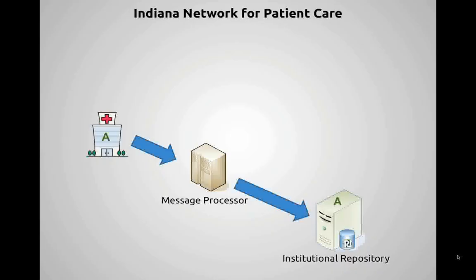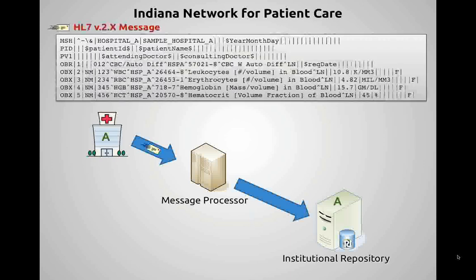Typically, if you want to send results from one place to another, a hospital or information system packages those results into an HL7 message. LOINC was designed from the very beginning to fit within this messaging context. In an HL7 message, vertical bars delineate fields like database fields. At the top of the message there are segments that identify the originating system, the patient, where the message is going, which physician it's being reported to, and so forth.